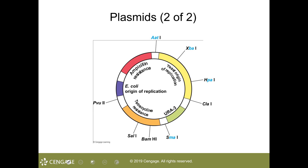This shows a plasmid — you can look at this on page 318. Within this plasmid, we have resistant genes for the antibiotics ampicillin and tetracycline. We also have the E. coli origin of replication and the yeast gene URA3. The restriction enzyme cut sites are shown going around concentrically, abbreviated by species.